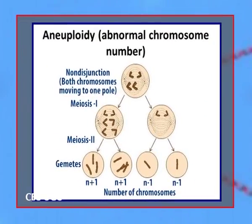Aneuploidy occurs when non-disjunction at a single chromosome results in an abnormal number of chromosomes. Aneuploidy is often harmful and in mammals regularly leads to spontaneous abortions or miscarriages. Whole Genome Duplication: Whole genome duplication, or polyploidy, is a product of non-disjunction during meiosis which results in additional copies of the entire genome. Polyploidy is common in plants but has also historically occurred in animals, with two rounds of whole genome duplication in the vertebrate lineage leading to humans.